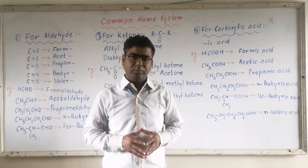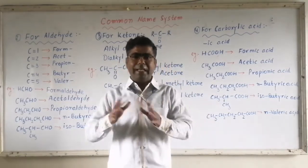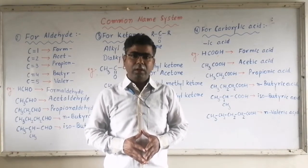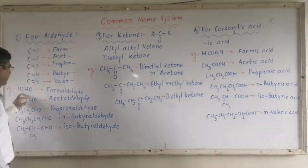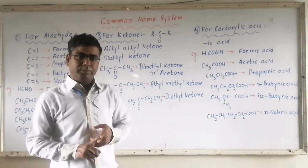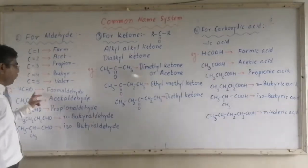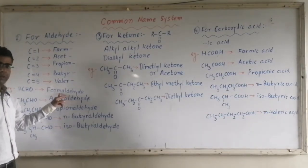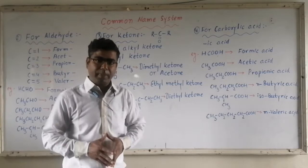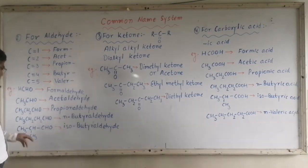To name a given aldehyde, just use the term plus 'aldehyde.' The first member is HCHO — it has one carbon atom, so the term is 'form.' Since we are talking about aldehyde, 'aldehyde' is added to 'form,' giving the common name 'formaldehyde.' Similarly, CH3CHO has two carbon atoms, so we use 'acet' — acet plus aldehyde gives 'acetaldehyde' as the common name for the second member.